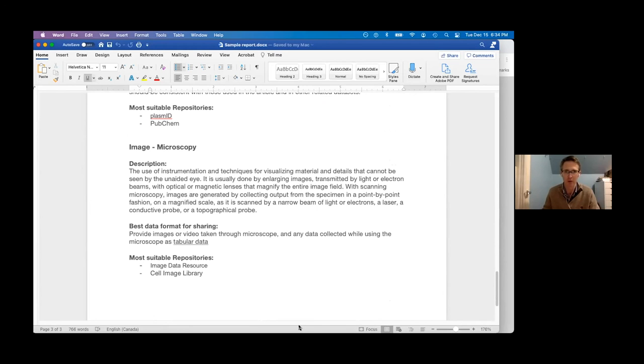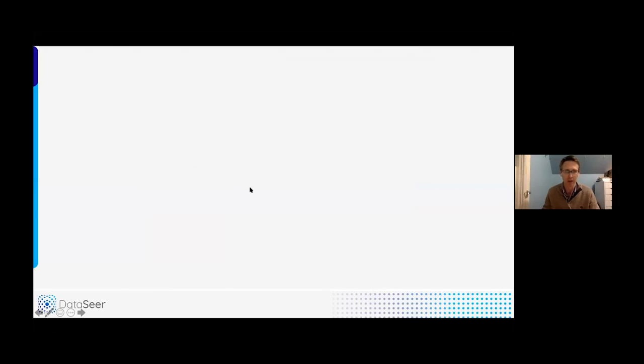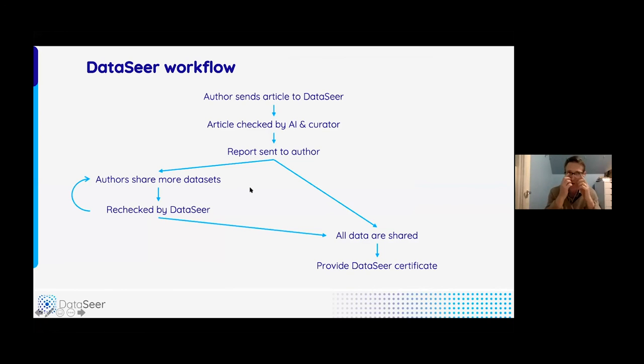I am going to go back to my slides. So this is the workflow we're working on at the moment. So authors are going to send articles to DataSeer. We'll check them over, and there will be a bit of hand curation at the moment because the AI is still learning. We'll send the report back to the authors. If there's a lot that they need to do, as in that article I just showed you, then the authors can share more datasets. We'll reassess it when all the data are shared or we've reached a consensus.